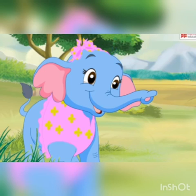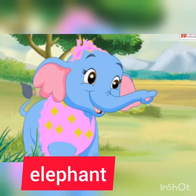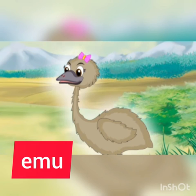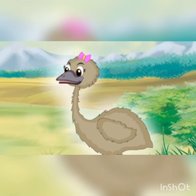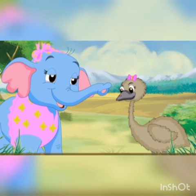Look children, who is this? This is baby elephant. E — elephant. And see, what is this? This is a bird, and the name of the bird is E — emu. This is emu. Elephant and emu are good friends and they live in a jungle.